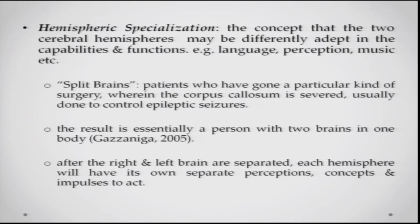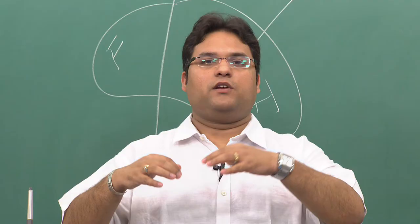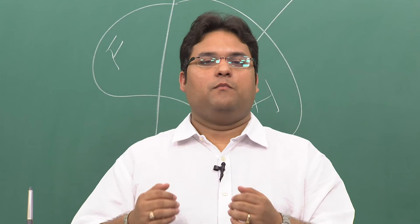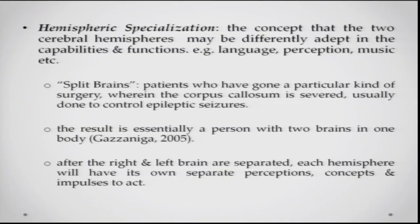An interesting scenario regarding hemispheric specialization occurs with split brain patients — those who have undergone surgery in which the corpus callosum is severed. Both sides of the brain continue functioning normally, but they are no longer connected. Gazzaniga notes this often results in essentially one person with two brains, where after separation each hemisphere has its own perceptions, concepts, and impulses to act, which are not communicated to or integrated with the other hemisphere.